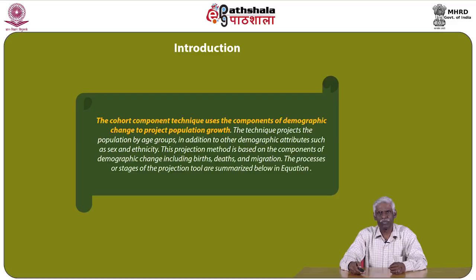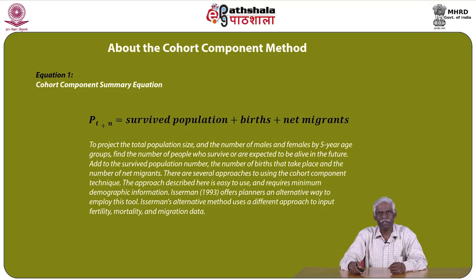This projection method is based on the components of demographic change, which include mainly births, deaths, and migration. The cohort component summary equation is denoted as P(t+n), which is equal to the survived population plus births plus net migrants.